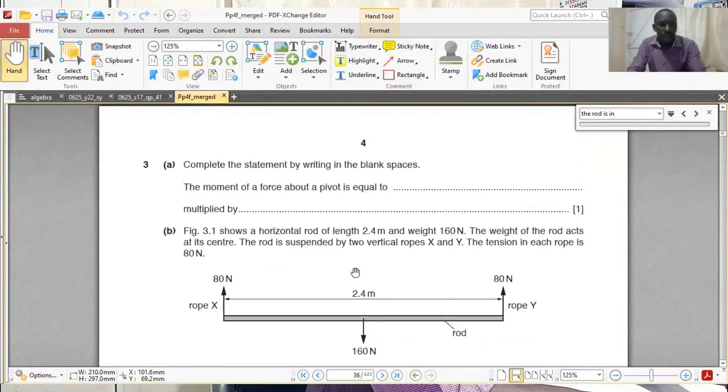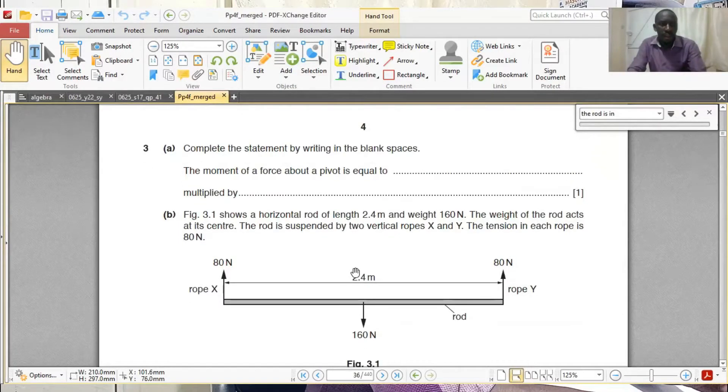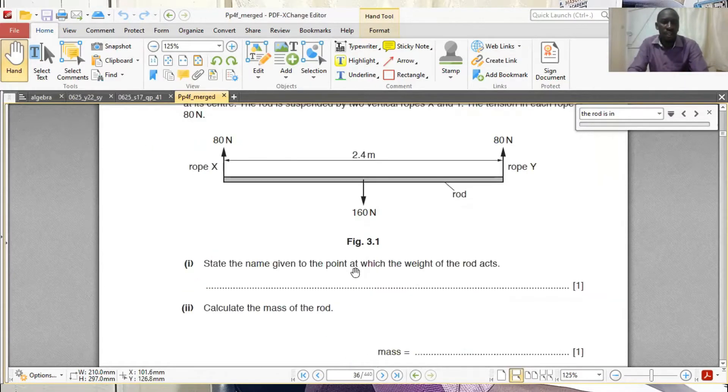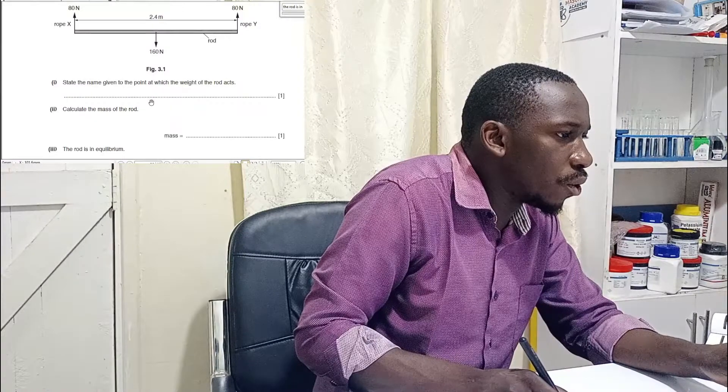Let the marks guide you in answering a question. Let the amount of marks guide you while answering a question. For instance, look at this question here. The figure 3.1 shows a horizontal road of length 2.4 meters and weight 160 newtons. The weight of the road acts at its center. The road is suspended by two vertical ropes x and y. The tension in the road is 80 newtons. You can see the diagram. Now, Roman 1. Let's just answer Roman 1.